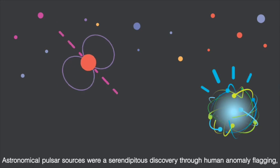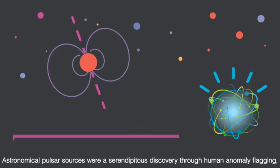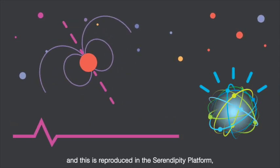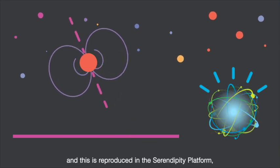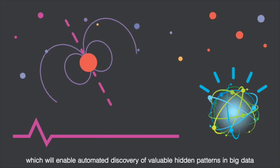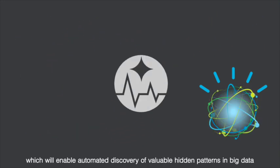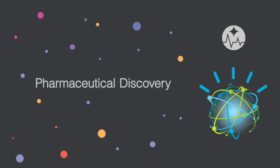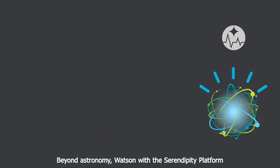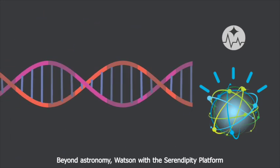Astronomical pulsar sources were a serendipitous discovery through human anomaly flagging, and this is reproduced in the Serendipity Platform, which will enable automated discovery of valuable hidden patterns in big data. Beyond astronomy, Watson with the Serendipity Platform could also discover hidden genetic anomalies and turn it into life-saving pharmaceuticals.